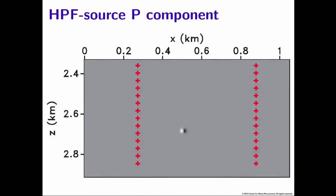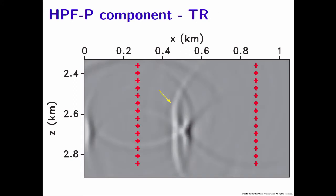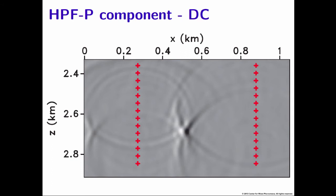For the P component due to a horizontal point force, we now have a nodal line running parallel to our receivers — not intersecting them. Using time reversal, we had that wavefront not compressing at the time of focus, making it very hard to retrieve the radiation pattern. However, using deconvolution, we're able to compress that wavefront at the time of focus, thus reconstructing that radiation pattern better.